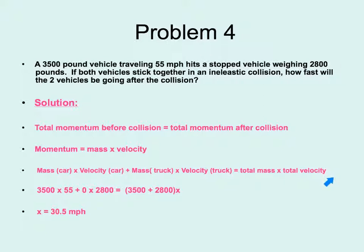The mass of our first car was 3500, its speed was 55. We will multiply that together and add that to our second car that weighed 2800 times the speed that that car was going, which was zero. That will equal the total mass of both cars, so 3500 plus 2800 times the total velocity. And this right here is what we're trying to identify or solve for. So once we solve for x, we would get the car traveling at 30.5 miles per hour.